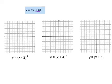Go ahead and graph these with your calculator and copy your graphs. x minus 2 squared is going to look something like this. x plus 4 cubed will look something like this. And the absolute value of x plus 1